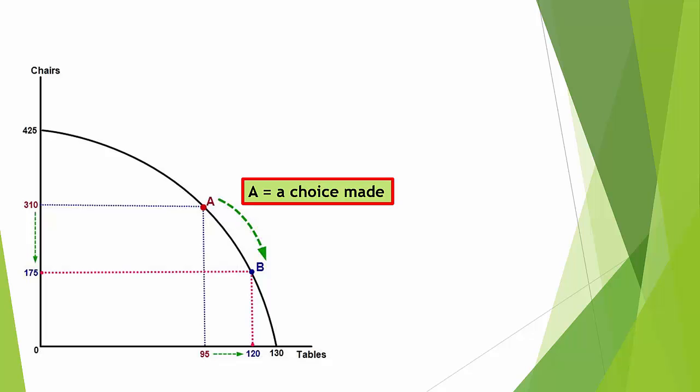Now let's say we move to point B. This is where opportunity cost is shown: moving from A to B, we gain 25 tables (from 95 to 120), but we forgo the next best alternative — producing chairs. We've given up 135 chairs, going from 310 down to 175 chairs, in order to gain those extra tables.